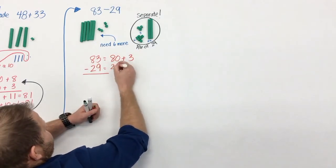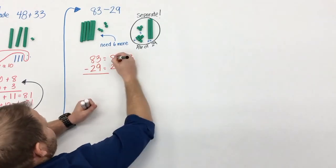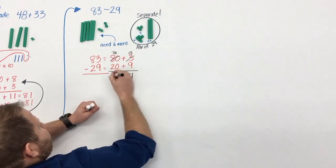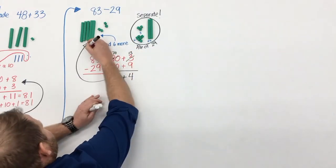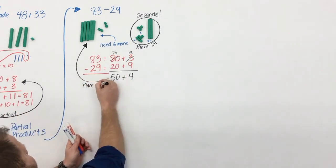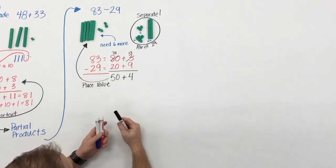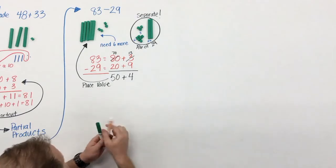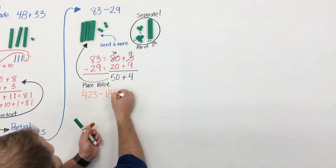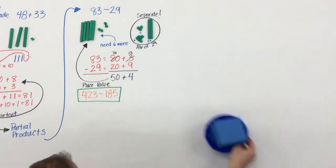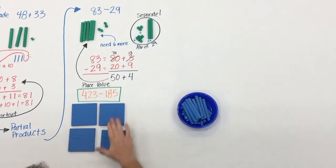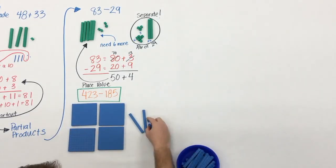So how can we move again from the concrete to the representation to the abstract? Again, everything that we're doing here and all the work that we're doing, we're not undermining place value. And what's great is that this model, this understanding that we're building, well, it also applies to larger numbers as well.